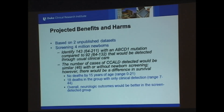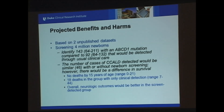This slide shows the projected benefits and harms. If you screen all four million babies born in the United States, you would identify about 143 newborns with an ABCD1 mutation, compared to the 92 that would eventually come to usual clinical care. The number of cases of the childhood cerebral form detected would be similar either way — because these children present with pretty dramatic signs and symptoms — but you can shift things earlier so that the risk of mortality would be lower.